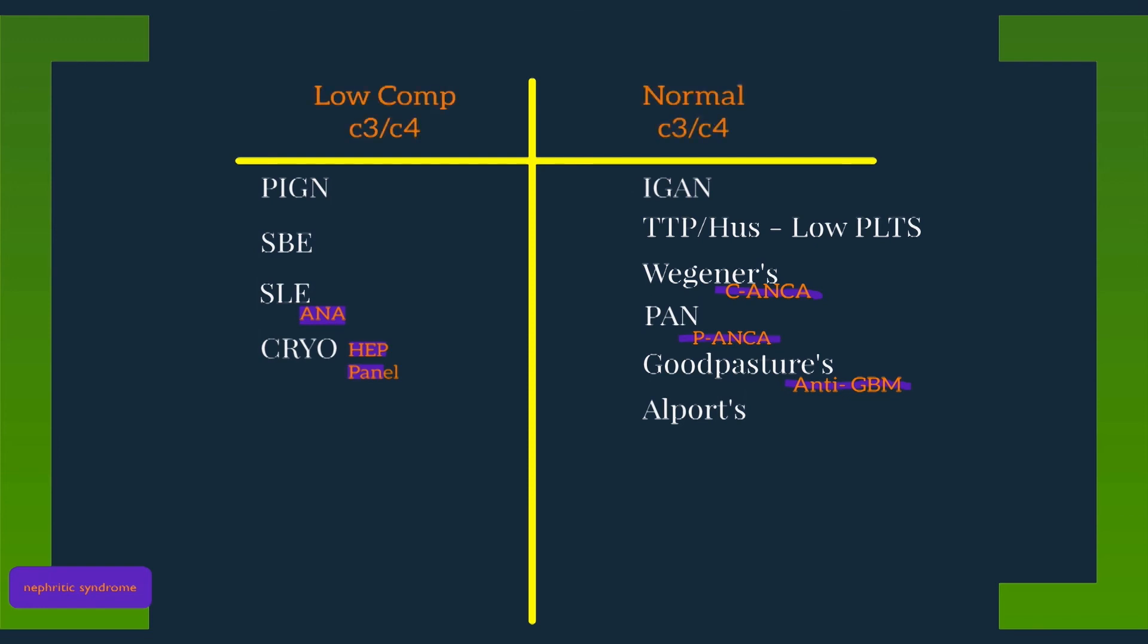These two groups can be defined in the following ways. The column on the left are all immune complex diseases, characterized by low C3 and low C4. The column on the right are more vasculitic in nature and characterized by normal C3 and normal C4.